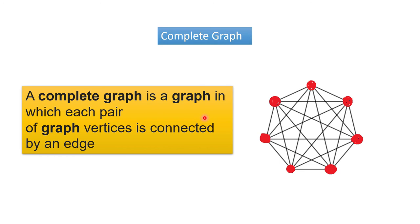Now we have to know what is a complete graph. A complete graph is a graph in which each pair of graph vertices is connected by an edge. In simple terms, a complete graph means where each and every node is connected to every other node by one edge — we don't have to go via someone else, we can directly go to any node. In this picture, from each node you can go to any other node by a single edge only. So that is known as a complete graph, or you can say a complete graph is a graph where each possible edge is present.